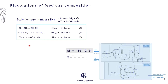For the system, there can be different dynamic operating conditions. Here we investigate the influences of feed gas composition. The feed gas composition can be represented by the stoichiometry number (SN), which is calculated by a specific equation according to the chemical reactions for methanol synthesis. The typical SN value is 2. In this study, the SN value was changed by 5% up and down to study the dynamic behaviors of the system.